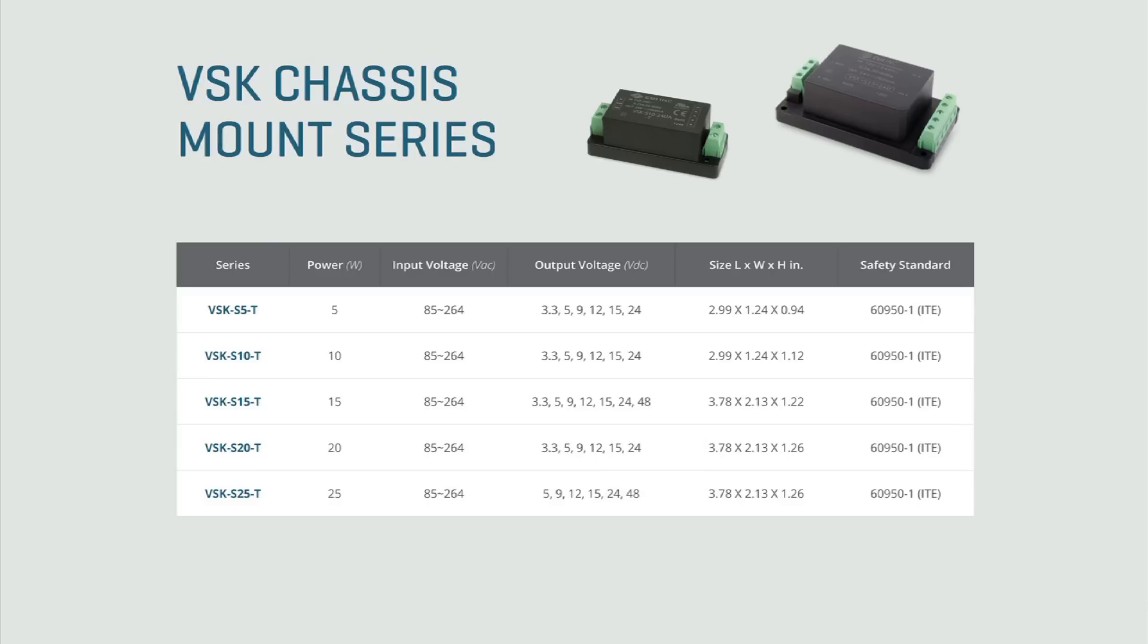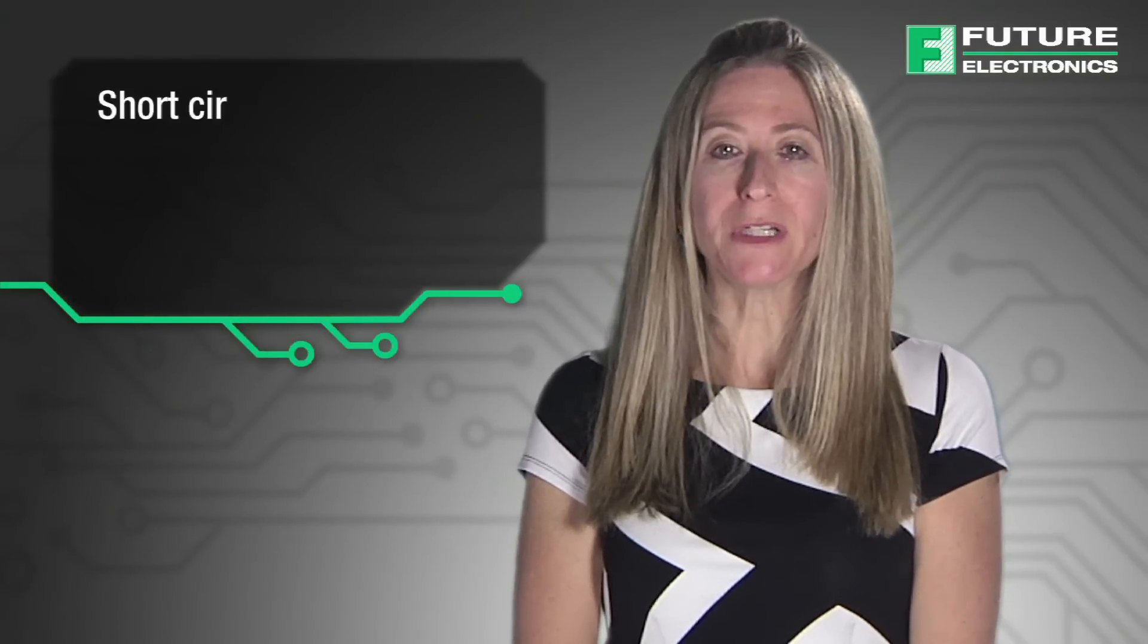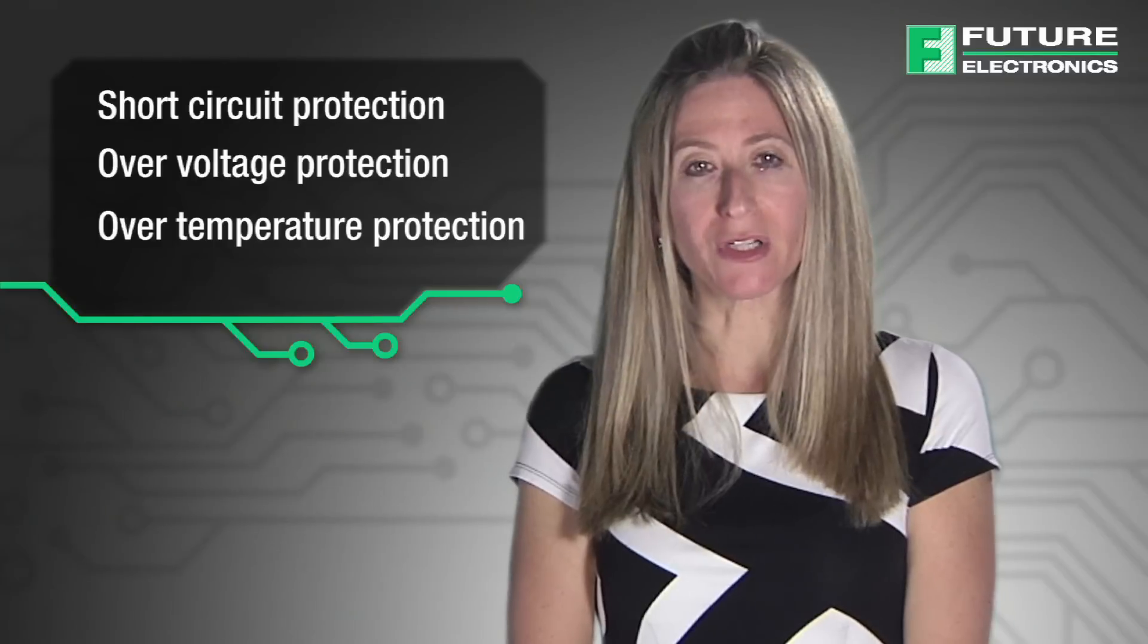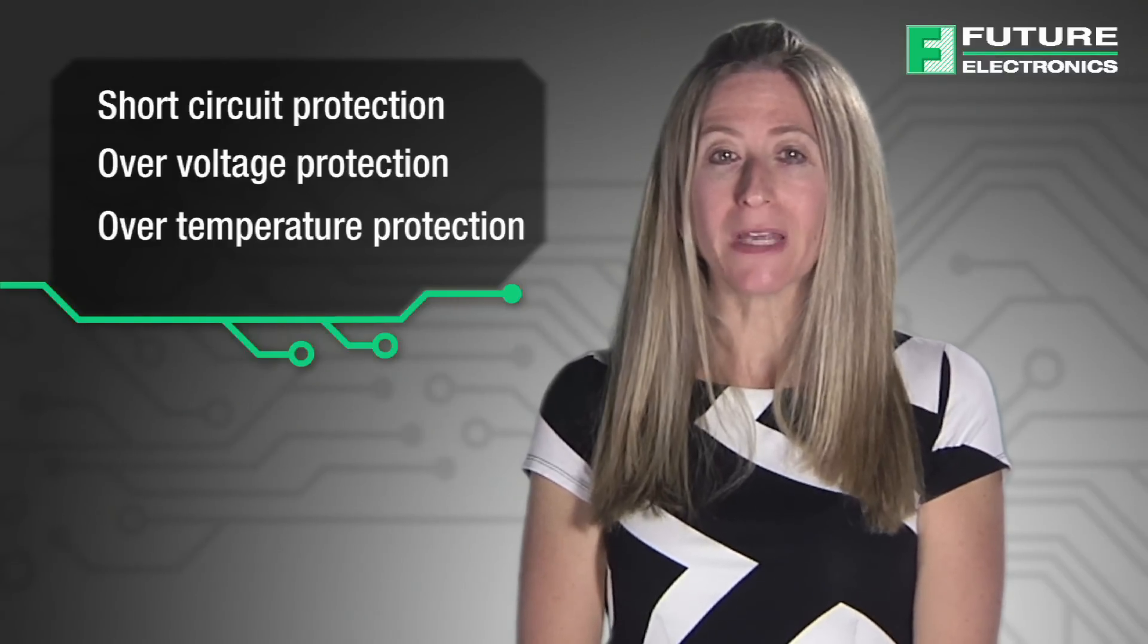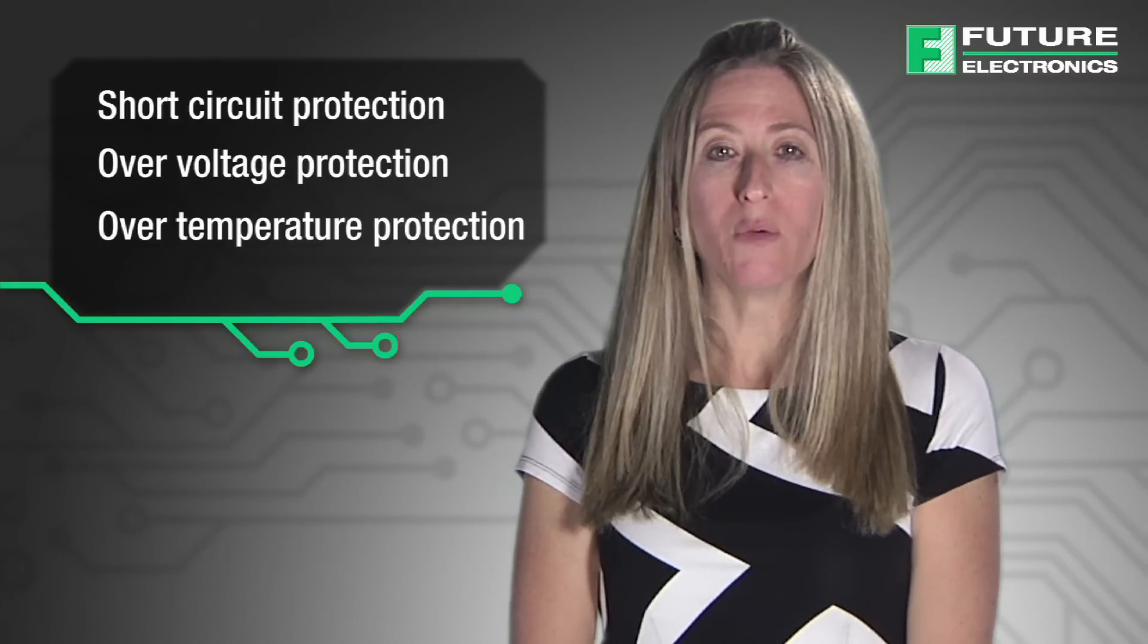The VSK-T series is offered in configurations ranging from 5W to 25W. The VSK series comes with built-in short circuit, over-voltage, and over-temperature protections. In the event of a fault in any of these areas, the converter's output will shut down, recovering automatically when the fault is removed.